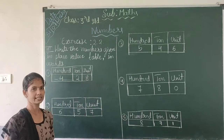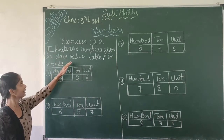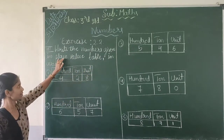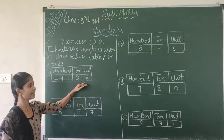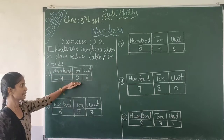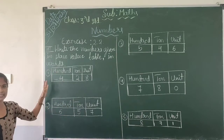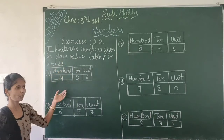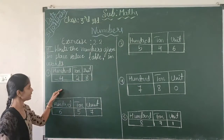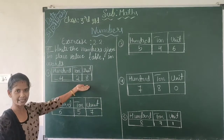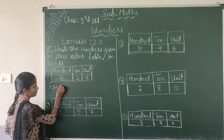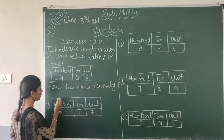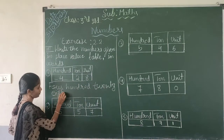Students, now we will go through the third part. Exercise: write the numbers given in the place value table in words. The table has already given the place value and numbers. In the 100's place: 4; in the 10's place: 2; in the units place: 8. The total number is 428. Write in words: four hundred and twenty-eight.